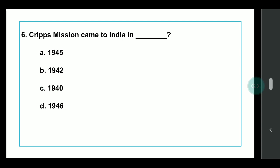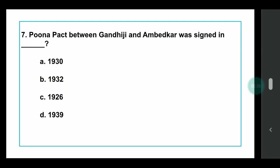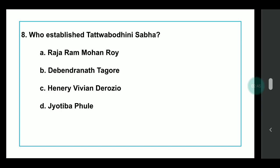Q6: The Cripps Mission came to India in which year? Answer: It came in 1942. Q7: The Poona Pact between Gandhi ji and B.R. Ambedkar was signed in which year? Answer: 1932. Q8: Who established the Tattva Bodhini Sabha? Answer: It was established by Debendranath Tagore.